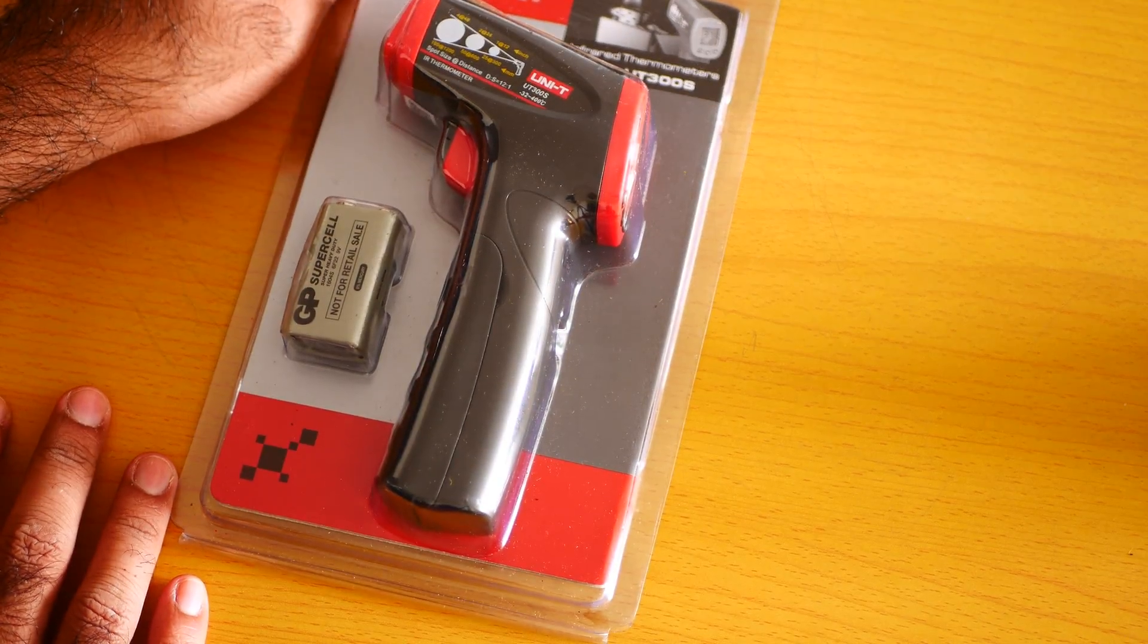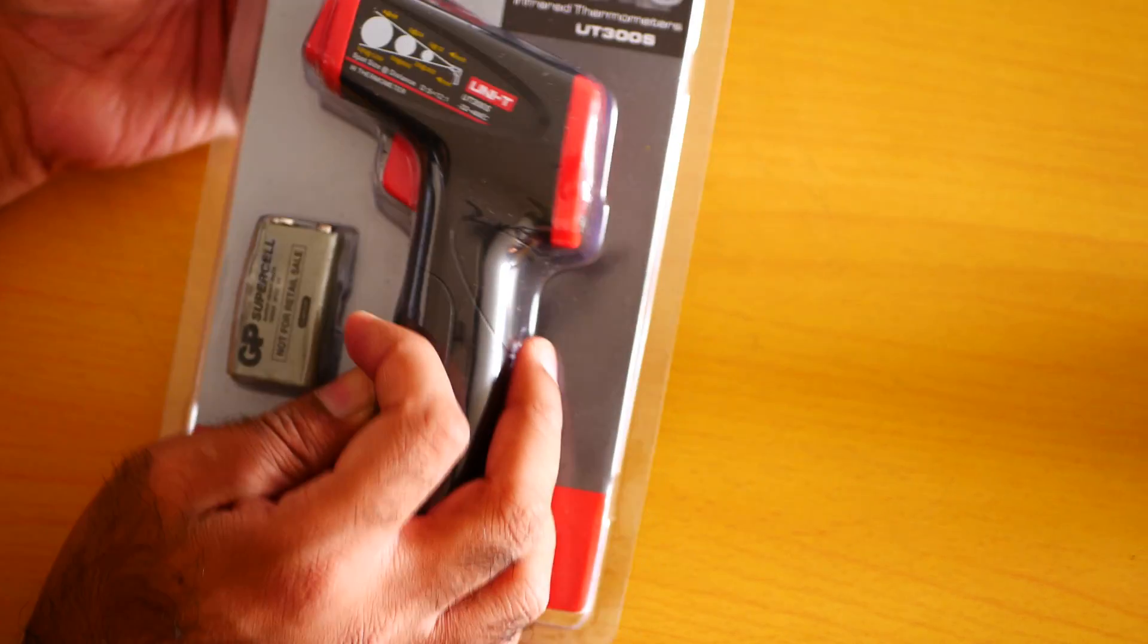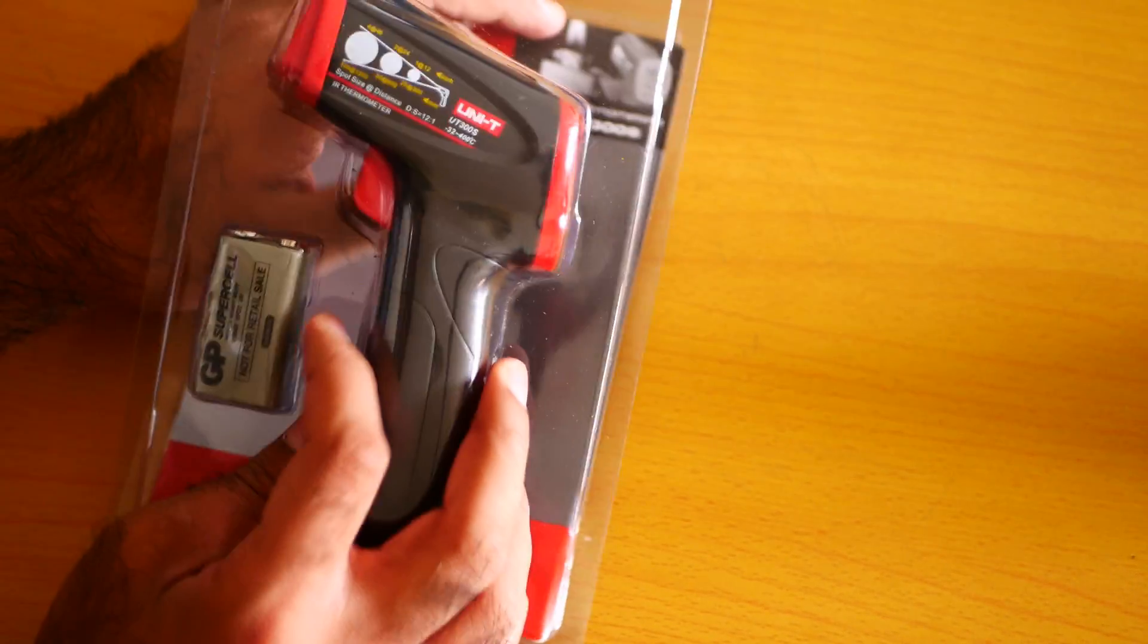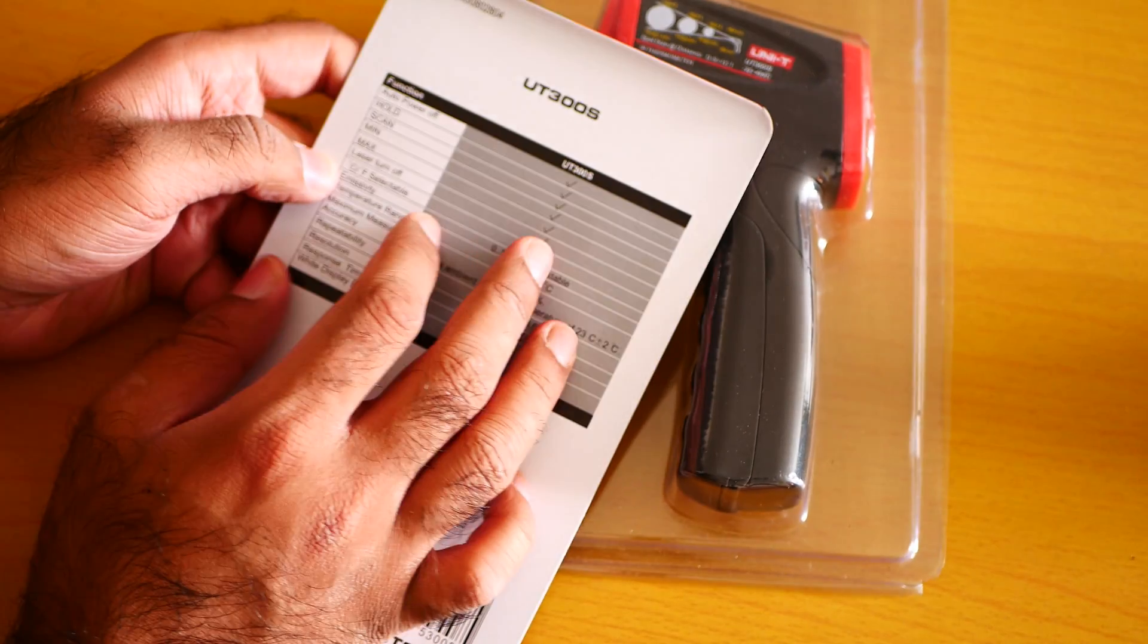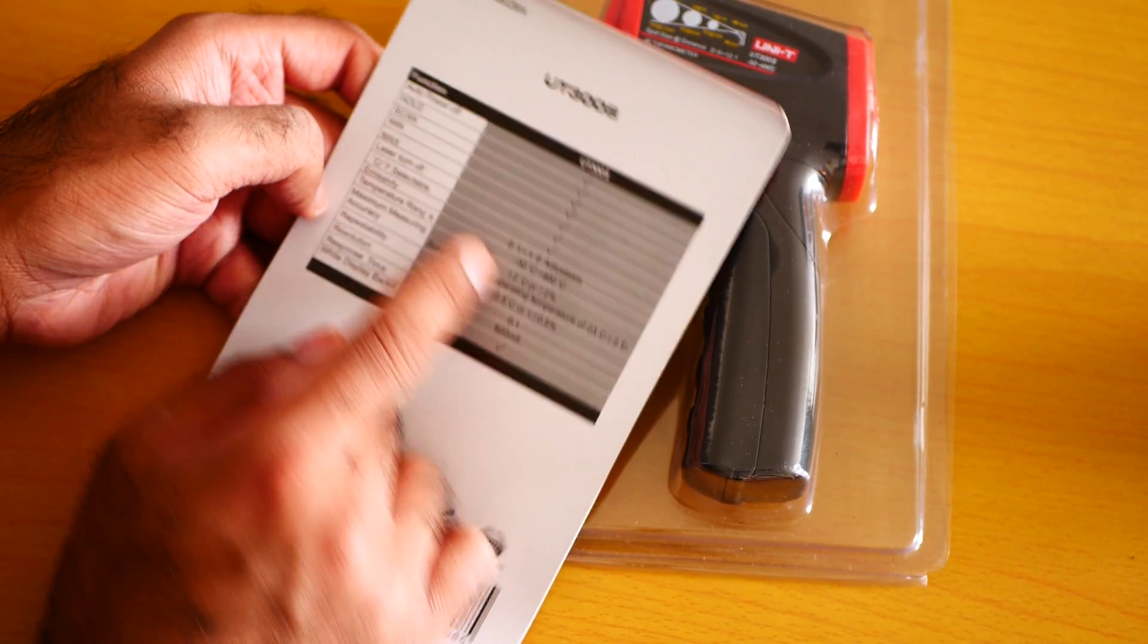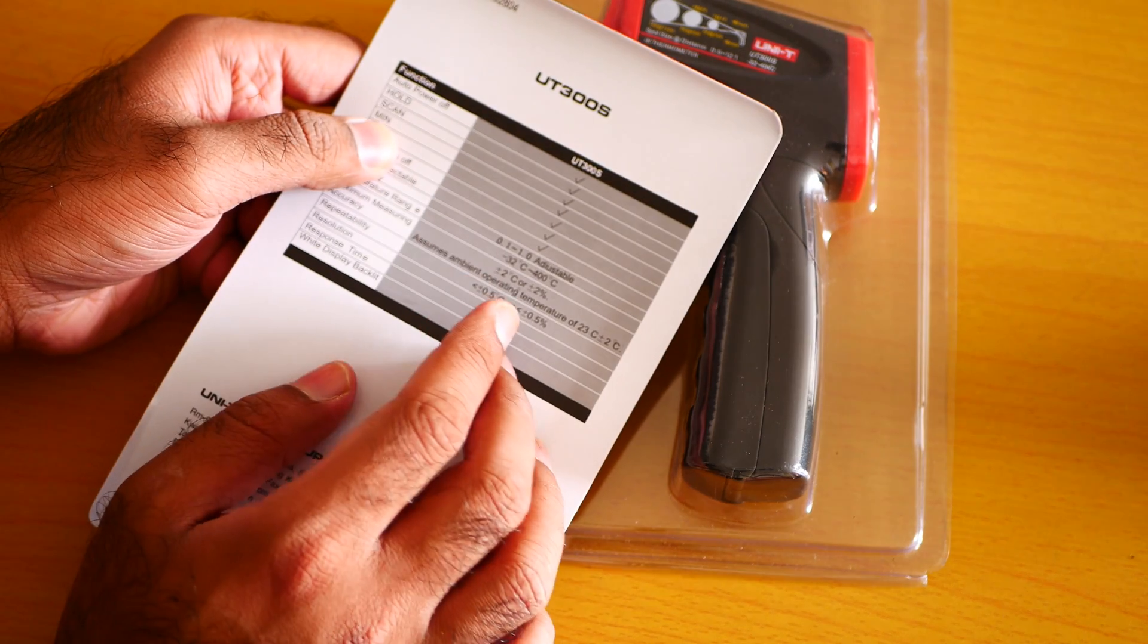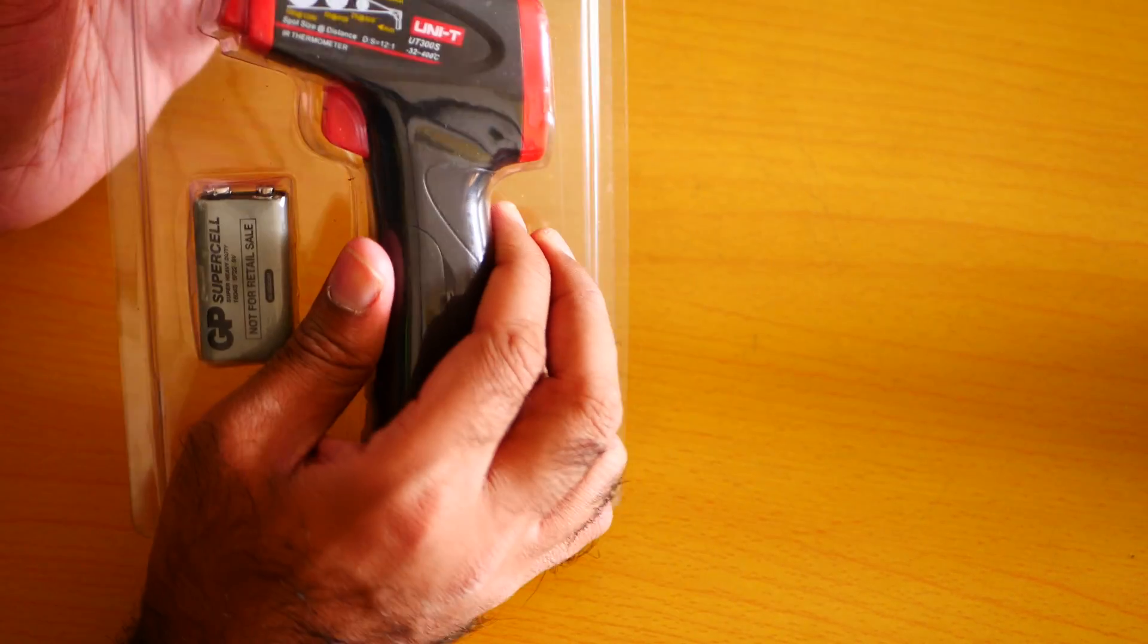The unboxing of the Unity UT300. Are you excited? I am definitely excited for it. Let me show you the main function of it. It has minus 32 Celsius to 400 degree Celsius range.